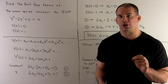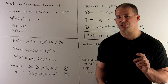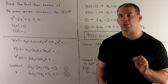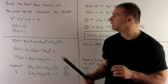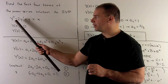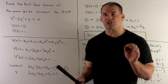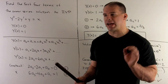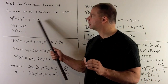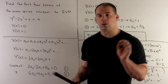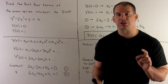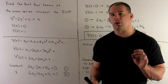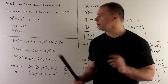Find the first four terms of the power series solution for the initial value problem: y double prime minus 2y prime plus y equals x, y of zero equals zero, y prime of zero equals one.